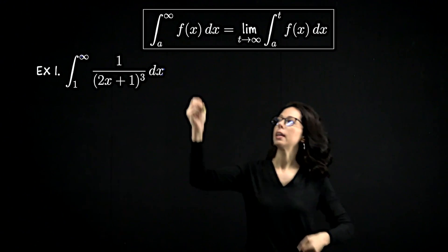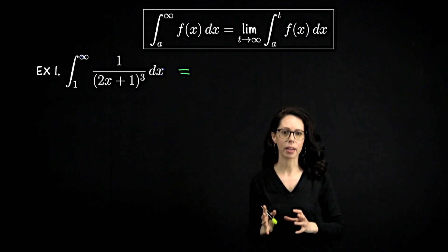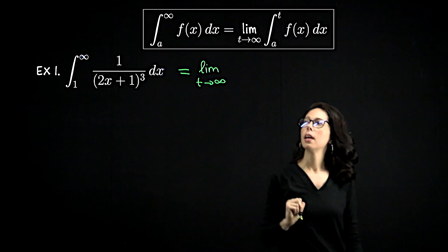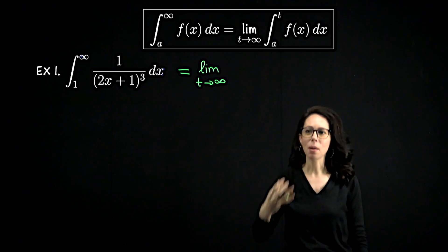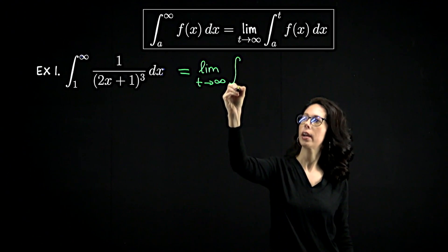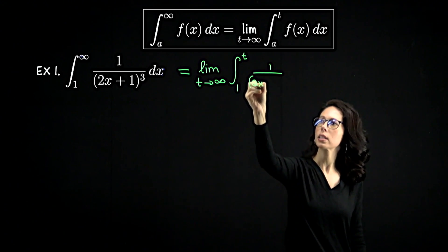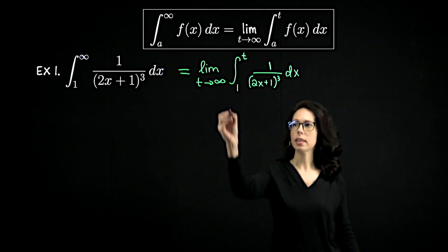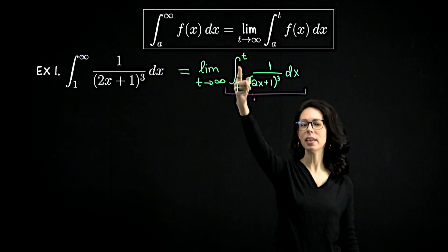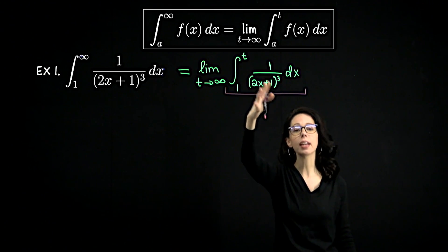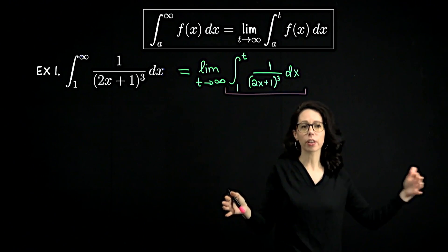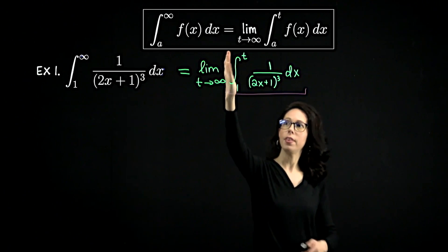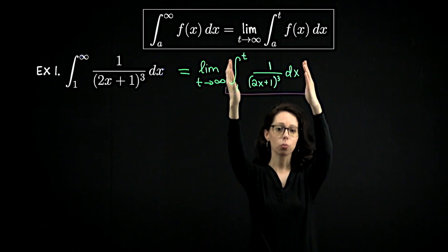So what we're going to do is say we cannot do the definition of Riemann integration as the integral is written, but what we can say is — and I'll write limit first — let's take that top bound of infinity and replace it with a number which in the moment is fixed, and then we'll let it go to infinity. So for this example, that's integrating from 1 to t of 1 over (2x+1)³ dx. With t as a fixed number, this is a real Riemann integral the way we've always done it.